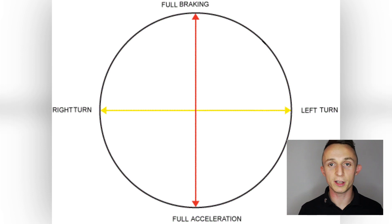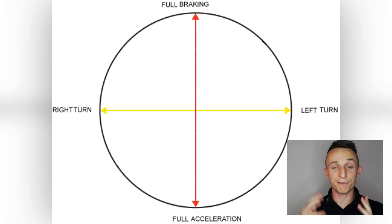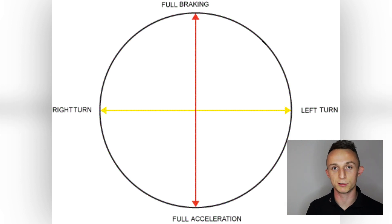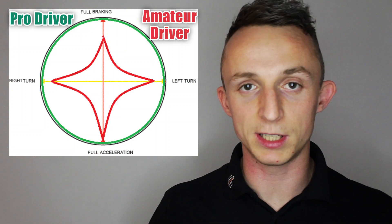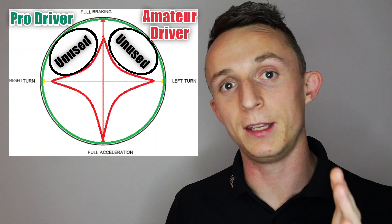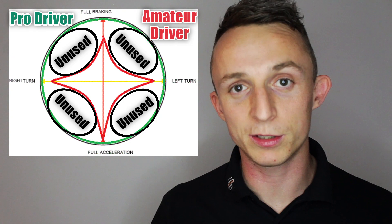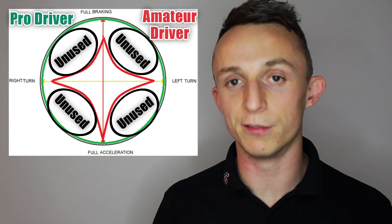Going back to the friction circle — what separates a good driver from an amateur? The ability of a fast driver is to maximise that friction circle as much as possible, staying as close to the edge of the circle in all parts of the corner and all parts of the circuit. Where that really stands out is in the combination of turning and braking on the way into a corner, and accelerating and turning on the way out. From the countless hours I've done coaching on circuit, that is where the biggest difference between a pro and an amateur driver is.